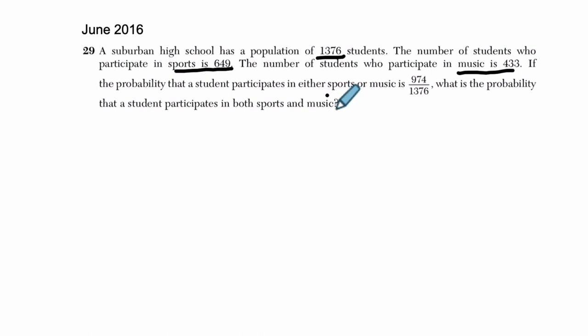If the probability that a student participates in either sports or music is 974 over 1376, what is the probability that a student participates in both sports and music? So we're trying to find both sports and music. How do we deal with this problem?